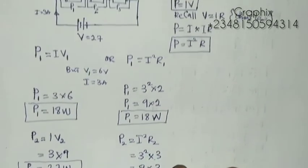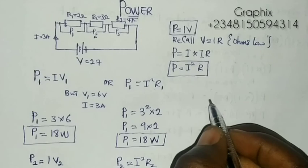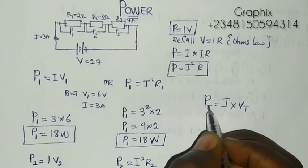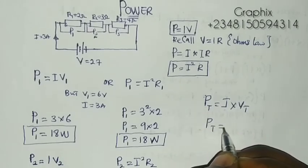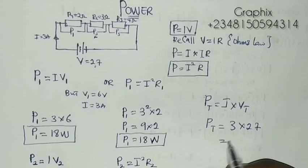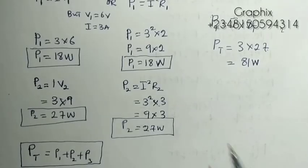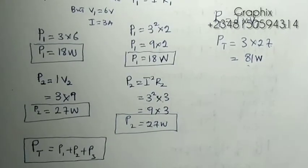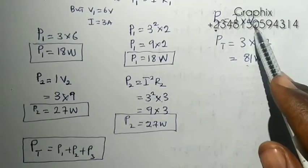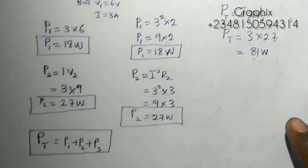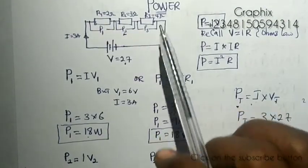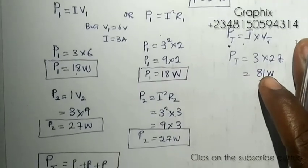But if you want the total power, you can easily use your formula that says P total equals I total times V total. So P total will be 3 times 27, which gives us 81 watts. So that is how to calculate the power - either you say the total power is the total current times total voltage, or you add all the individual power across each resistor and you get your power. So thank you for watching.